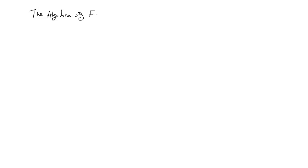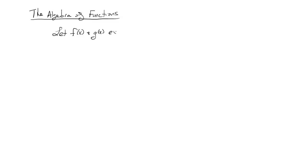In this section we're going to talk about the algebra of functions. All this is is a fancy way for us to talk about addition, subtraction, multiplication, and division of functions. The best way to go about this is to show you the rules and demonstrate some examples. So we're going to say let f of x and g of x exist as independent functions — they can be any functions.